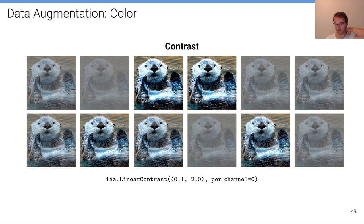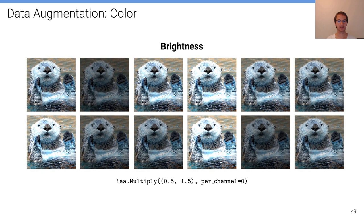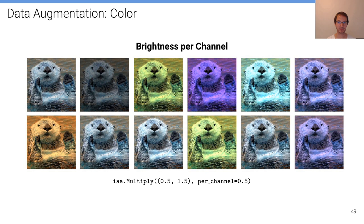Simple color transformations include changing the contrast — some images become more faint and others have stronger contrast, with the contrast strength chosen randomly for each image. You can do the same for brightness, producing darker or brighter images, and you can apply these per channel so images get different colorized versions. These examples are slightly exaggerated to highlight the differences; in practice you might not apply these transformations as strongly.